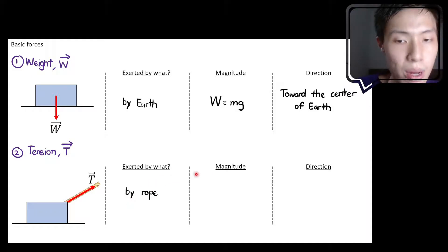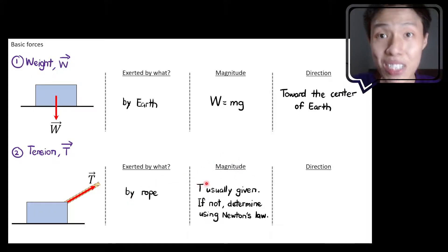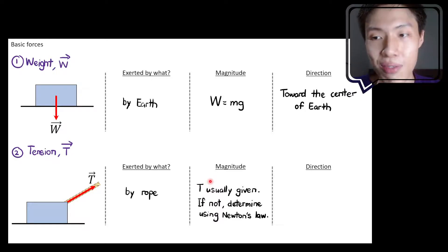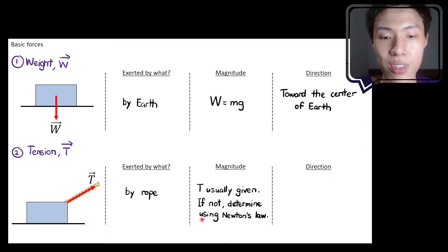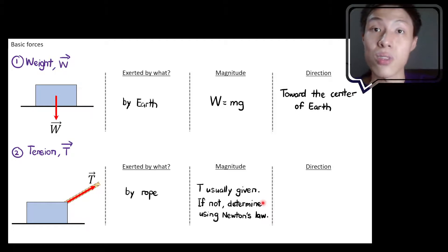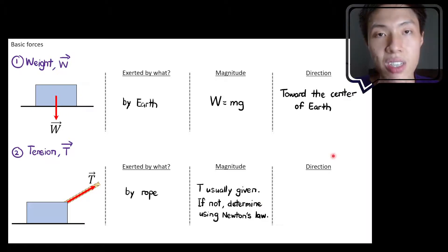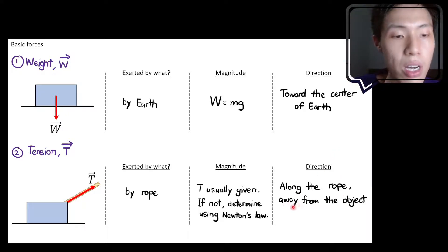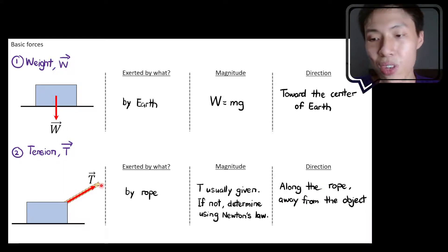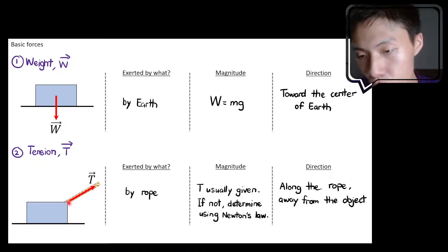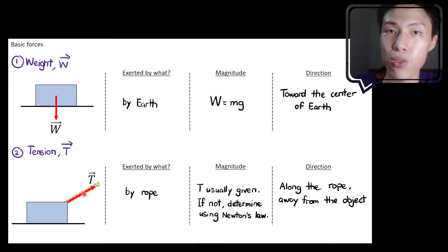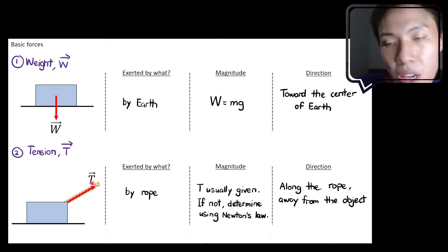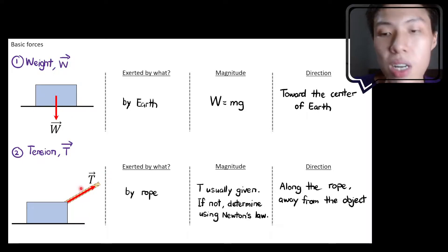It's always important when we talk about force to know what exerts it and on what — this will be important when we study Newton's third law. For weight, it's by the Earth on the object. For tension, it's by the rope on the object. The magnitude T is usually given in a problem; if not, you determine it using Newton's laws. For direction, tension is always along the rope, away from the object — you can never push using a rope, only pull.